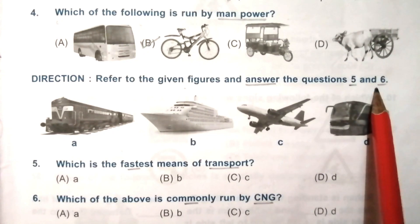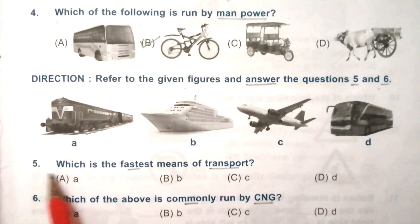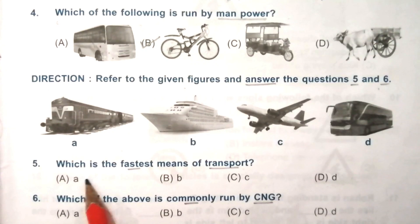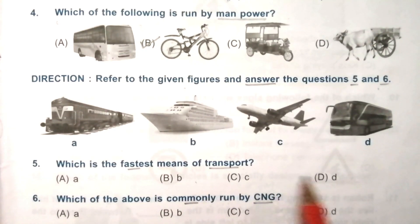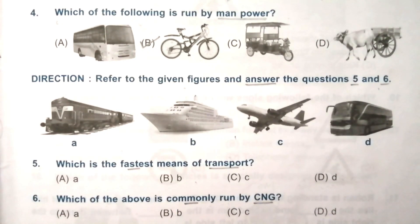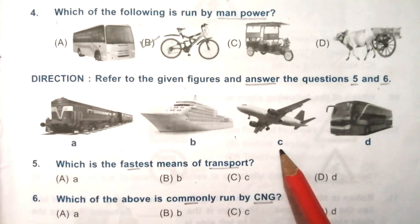Direction: refer to the given figures and answer questions 5 and 6. Look at the given pictures carefully. Question 5: which is the fastest means of transport — A, B, C, or D? The fastest means of transport is an aeroplane, so the answer is C.